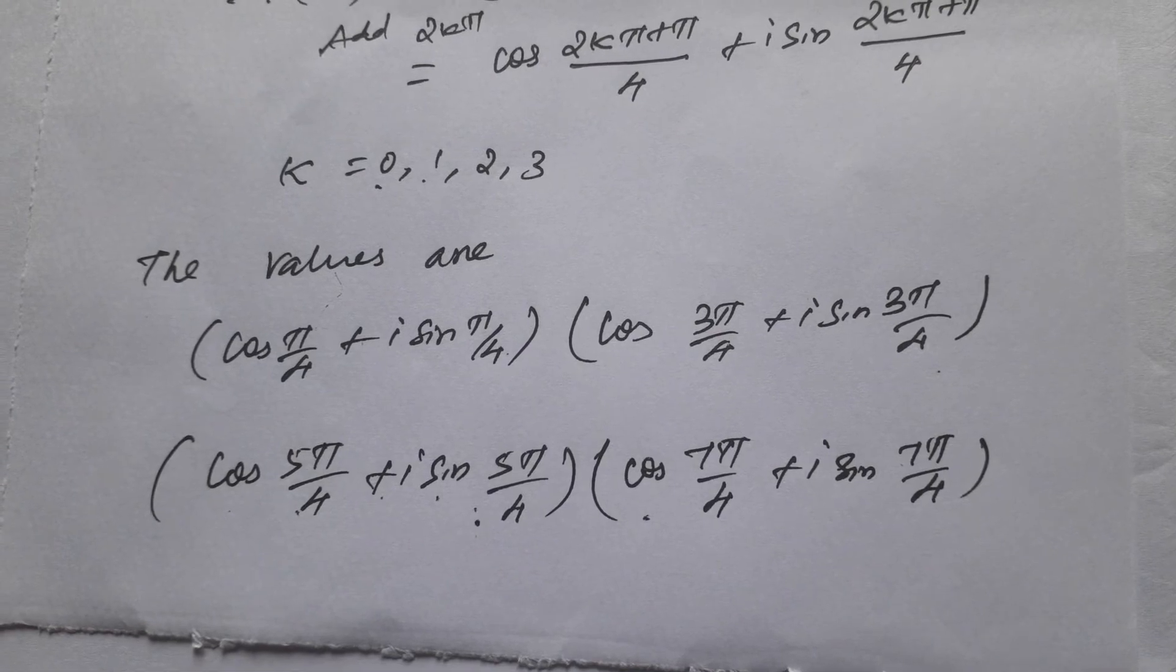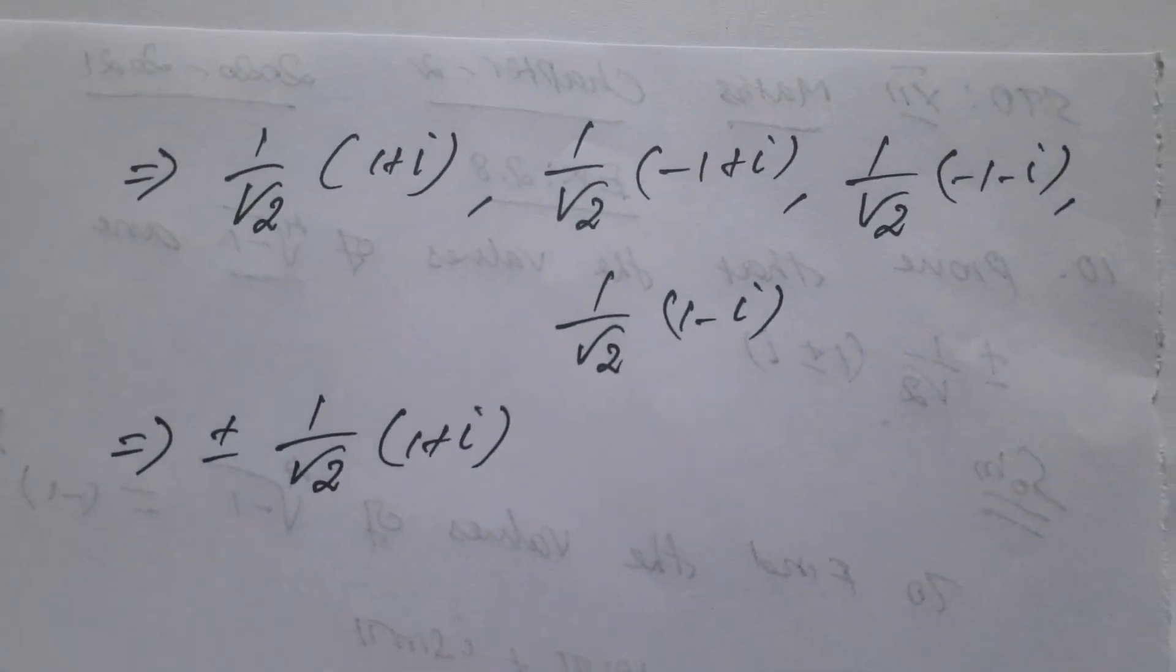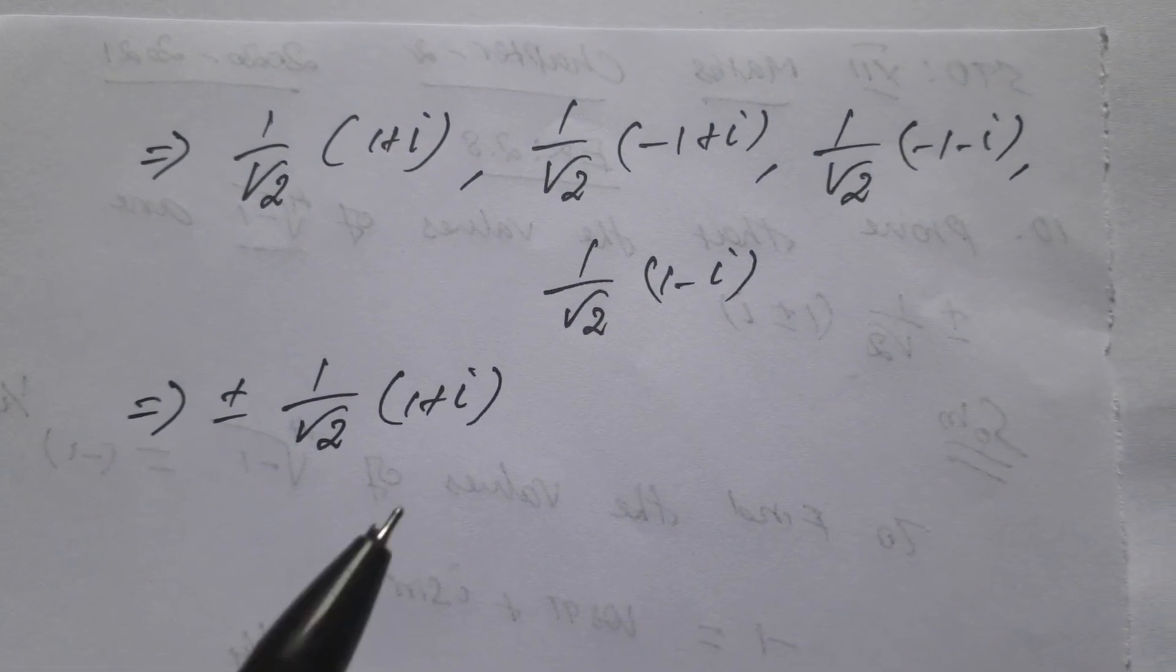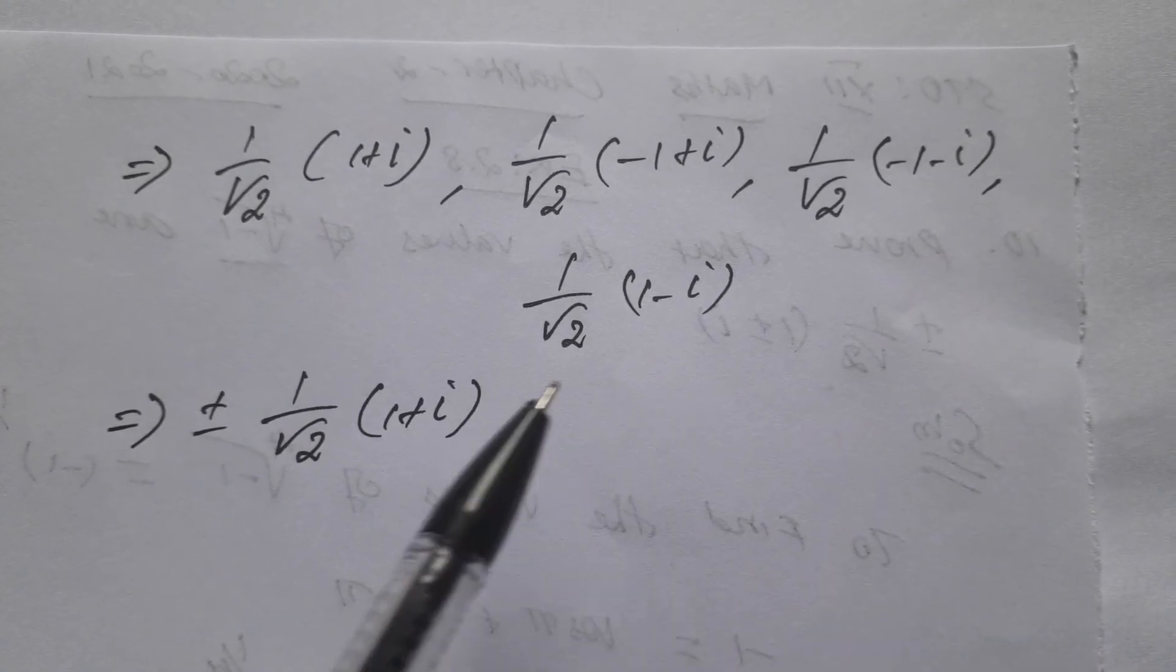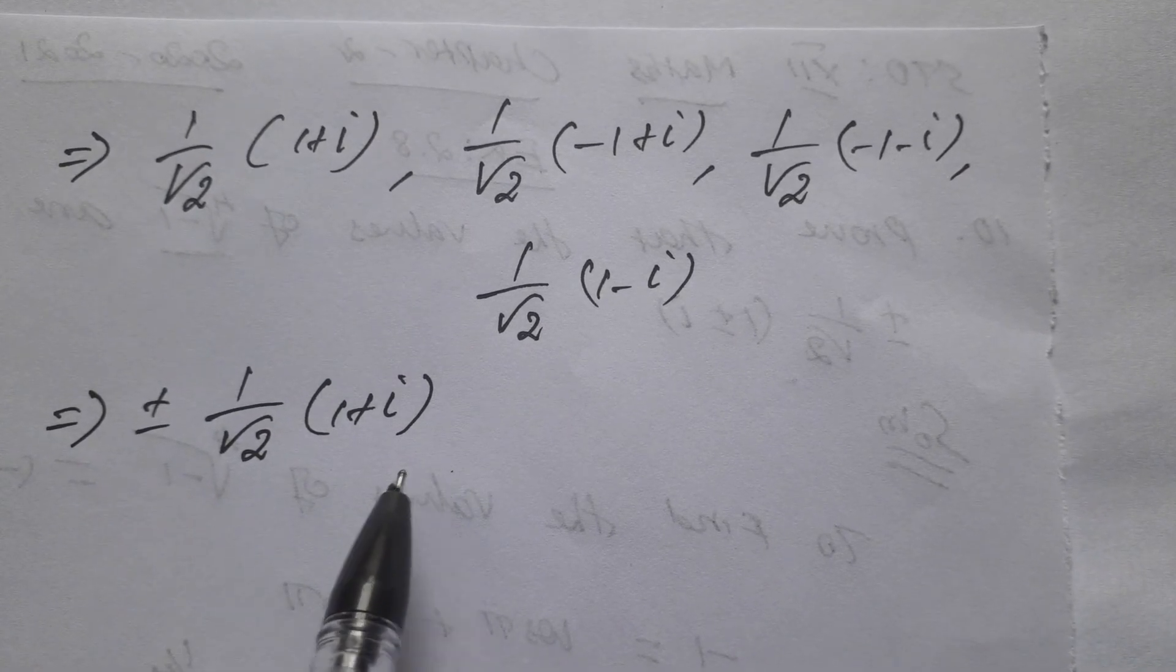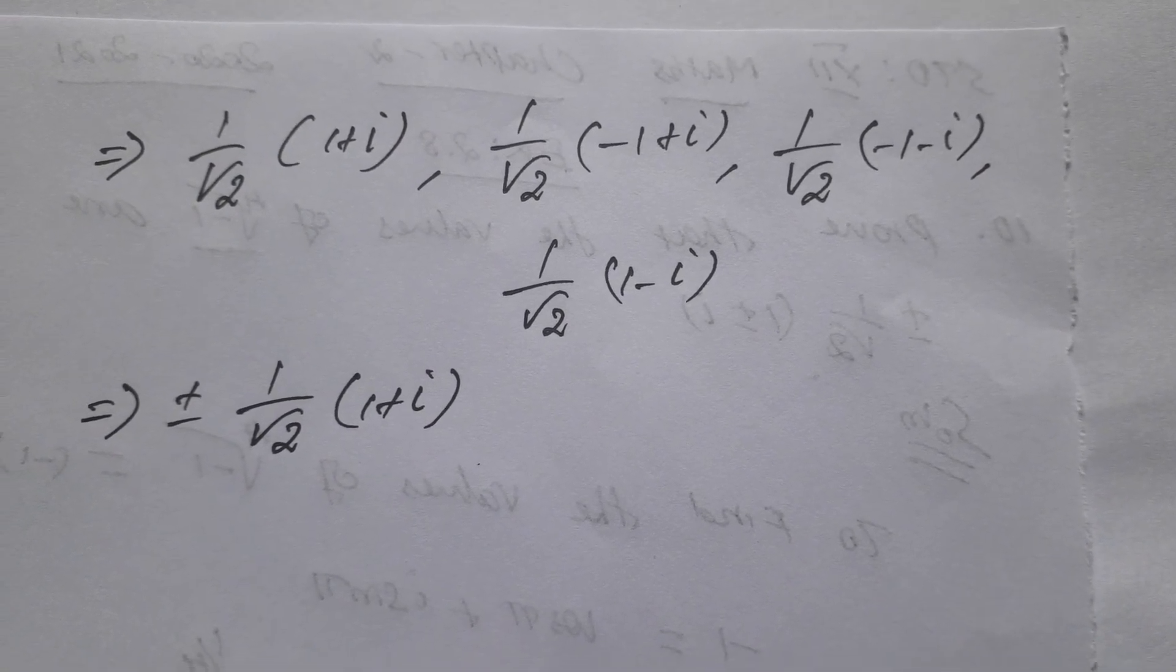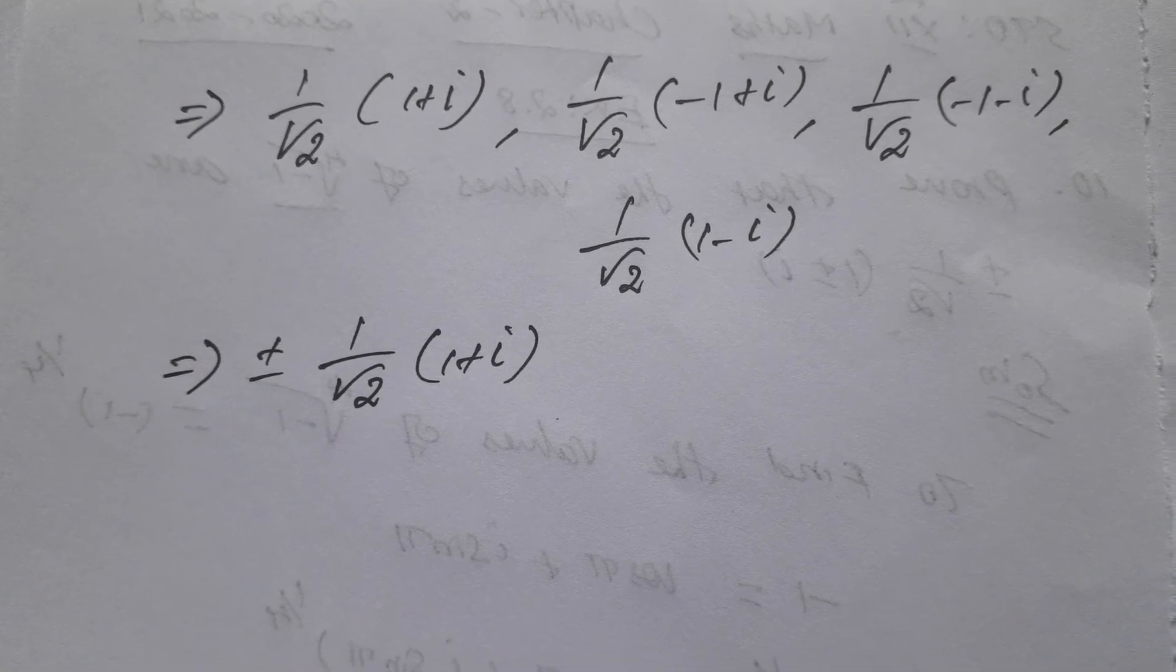So 1 by root 2 into 1 plus i, 1 by root 2 minus 1 plus i, 1 by root 2 into minus 1 minus i, 1 by root 2 into 1 minus i. This is the form, plus or minus. So this is the proof that we need to do it. So we need to repeat it, easier to do it.